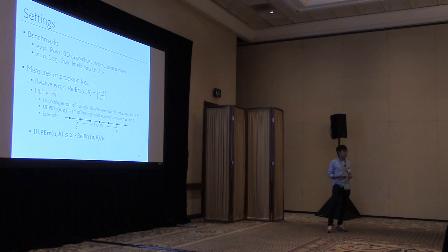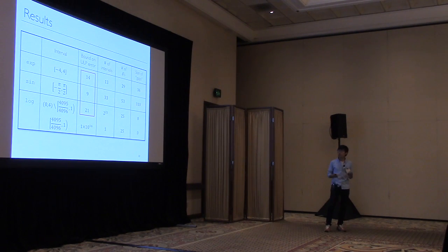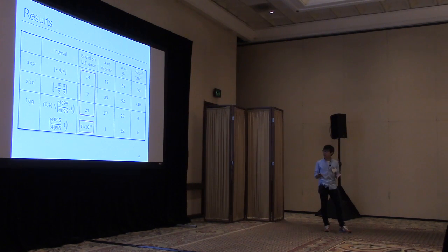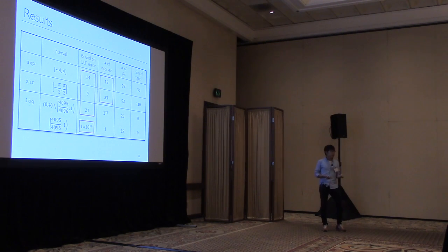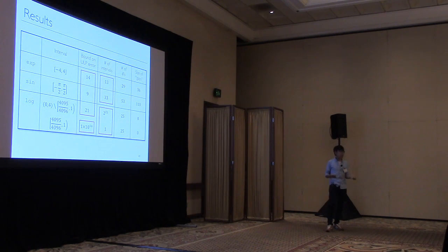ULP is related to the relative error that we have been using, and we can easily interchange between the two. Now I will show a subset of our results. You can first see that the error bounds from our method are very small for most cases. For example, it was 9 ULPs for the sine implementation, which is very good because this error bound implies that there can be at most 9 floating-point numbers between Intel's result and the mathematically exact result. For the log implementation, we obtain a large ULP bound over a small interval, showing a limitation of our method which I will discuss shortly. You can also see that the number of intervals that our method constructs is very small for two implementations. For the log implementation the number of intervals was large, but our method was still able to find ULP bounds in a reasonable amount of time.